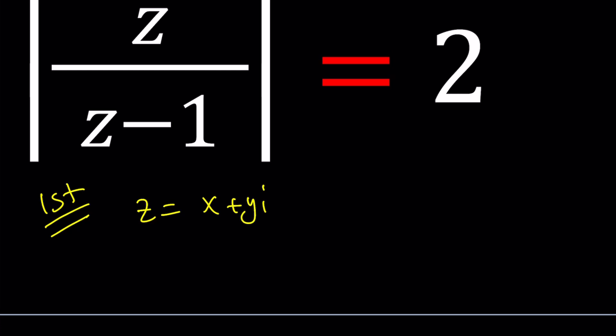If you do that, you're going to get something like this. The z is going to be x plus yi, and at the bottom we're going to have x minus 1 because we are supposed to subtract this from the real part, plus the imaginary part stays the same, and this is equal to 2.